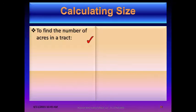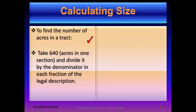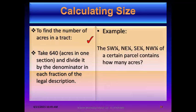To find the number of acres in a tract, take 640 acres in one section and divide by the denominator in each fraction of the legal description. For example, for the southwest quarter of the northeast quarter of the southeast quarter of the northwest quarter: take 640 acres and divide by four, four times — once for each quarter — to arrive at 2.5 acres.